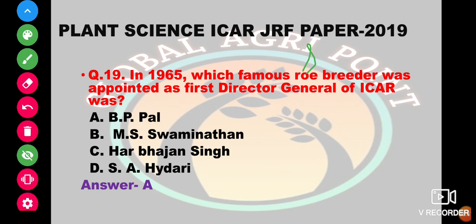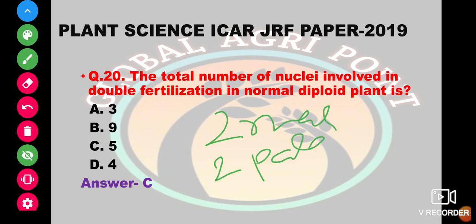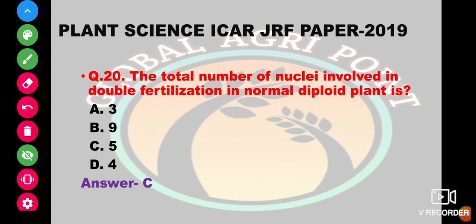The total number of nuclei involved in double fertilization in a normal diploid plant: two male gamete nuclei, two polar nuclei, and one egg cell — a total of five nuclei are involved. The options are three, nine, five, or four. The answer is five.